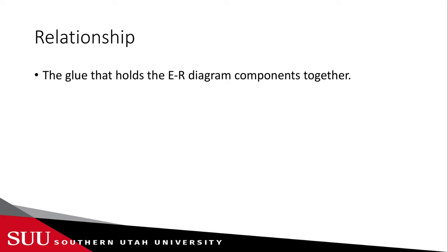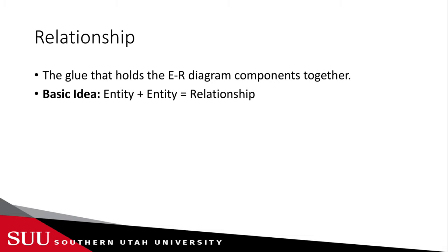The idea of a relationship — we can think of it as the glue that is going to hold the ER diagram components together. We cannot have any entity that is floating in the ER diagram. If it's floating without any relationship to other entity types, then that entity type does not make sense to the organization or is not relevant to the organization we are trying to model, so we exclude that entity.